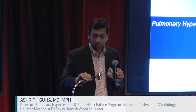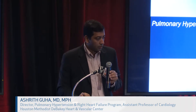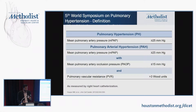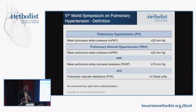Most of my talk will be on PH, and we'll review a few things about RV failure. PH is a hemodynamic definition — mean pulmonary artery pressure over 25. Mean PA pressure with wedge pressure under 15 defines pulmonary arterial hypertension, in association with PVR greater than 3 Wood's units. This was from the Fifth World Symposium.